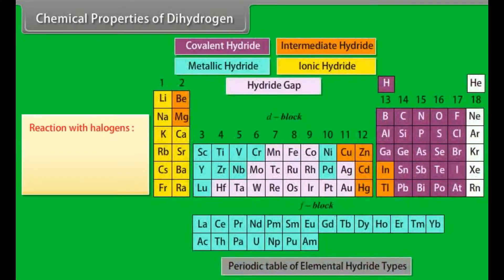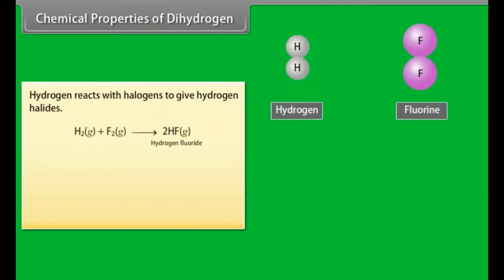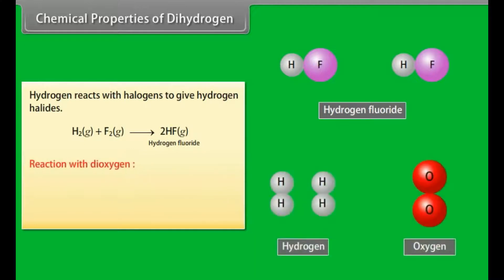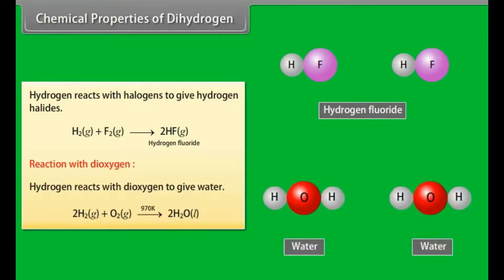Chemical properties of dihydrogen. Reaction with halogens: The reactivity of halogens with hydrogen is fluorine greater than chlorine, greater than bromine, greater than iodine. Hydrogen reacts with halogens to give hydrogen halides. Reaction with dioxygen: Hydrogen reacts with dioxygen to give water.